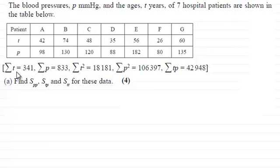We've got some summary statistics here as well and we've got to find the values of SPP, STP and STT for these data for four marks.